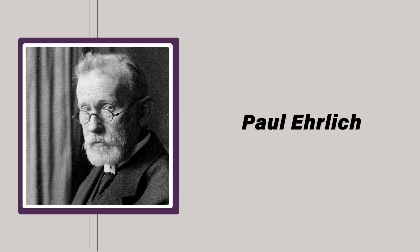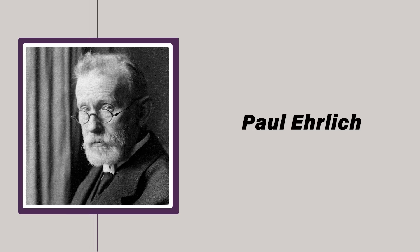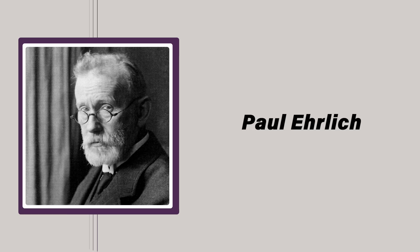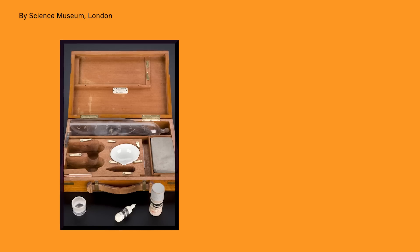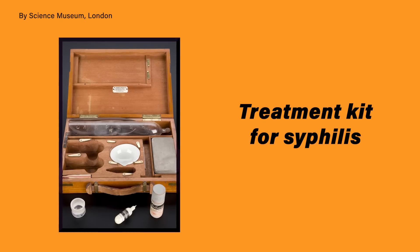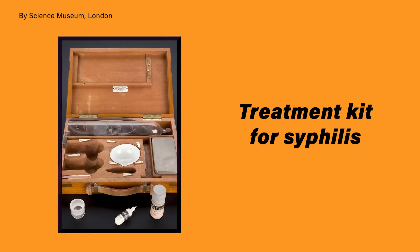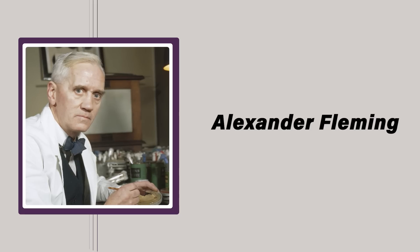It wasn't until the 19th century that Paul Ehrlich, a German physician, theorized that it was possible to kill certain bacteria while leaving other microorganisms untouched. In 1909, he discovered a chemical, arsphenamine, that acted as an effective treatment against syphilis. Some see this as the first modern antibiotic, though Ehrlich himself referred to it as chemotherapy. Very few people at the time probably cared about the semantics — they were just thrilled that syphilis was finally treatable.